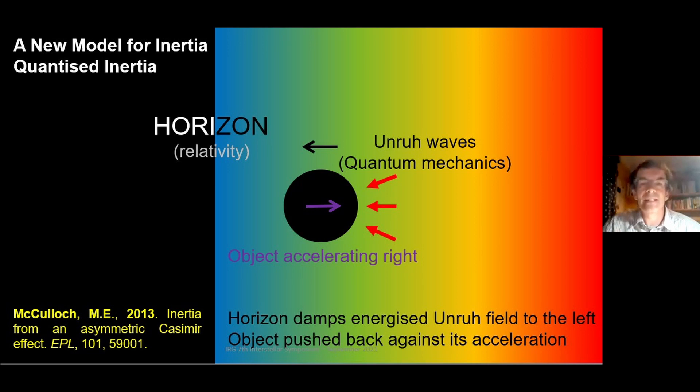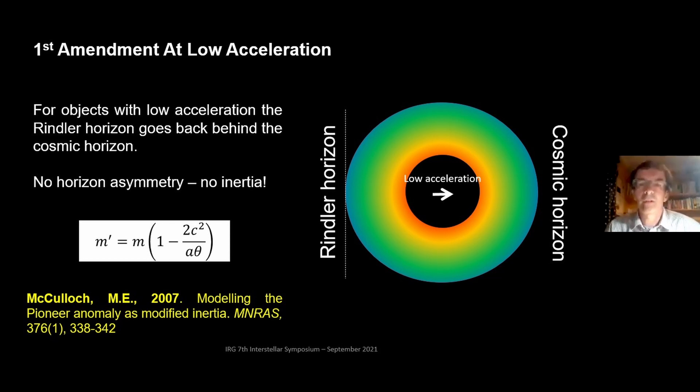So Quantized Inertia, the essence of it, is assuming that this horizon damps the Unruh waves. So I've tried to show that by showing this blue color here. The Unruh field is warm in front of the object, it's cold behind it, so you get a push back. There's more radiation hitting the object from in front than from behind, so it pushes back against its acceleration. I showed in a paper in 2013 that this looks like inertial mass.